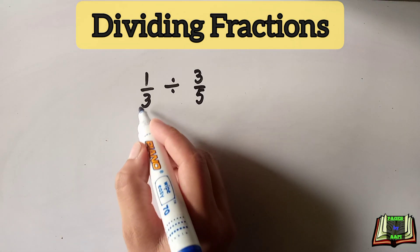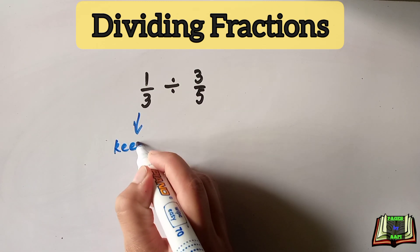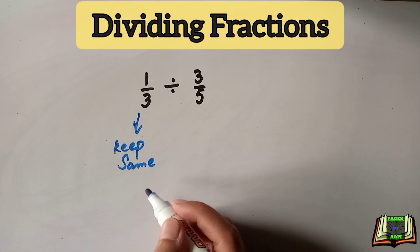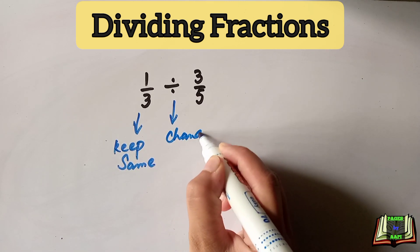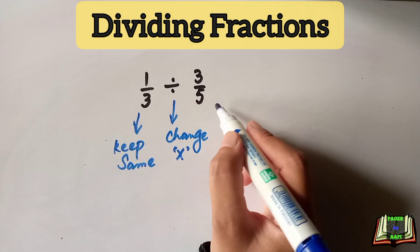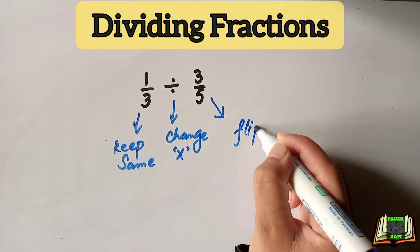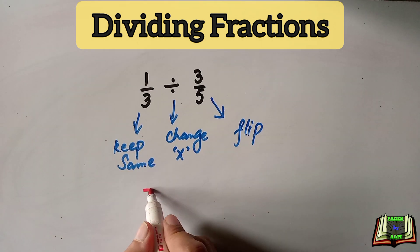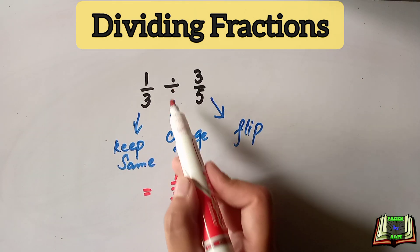Whenever we are dividing two fractional numbers, the first number — the dividend — will remain the same, we keep it as it is. The second step is to change the middle divide sign into a multiply sign. The third step is we will flip the divisor: if there is a fraction three by five, it will be changed into five by three — its reciprocal.